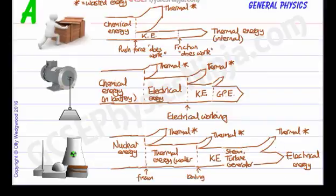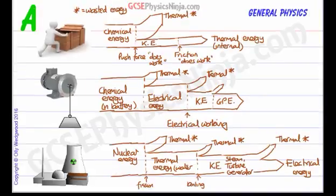And nuclear power stations are about 33% efficient generally. So those are three energy transfer examples using Sankey diagrams or thermal energy transfer diagrams to help us see the energy transfers. Thank you very much.